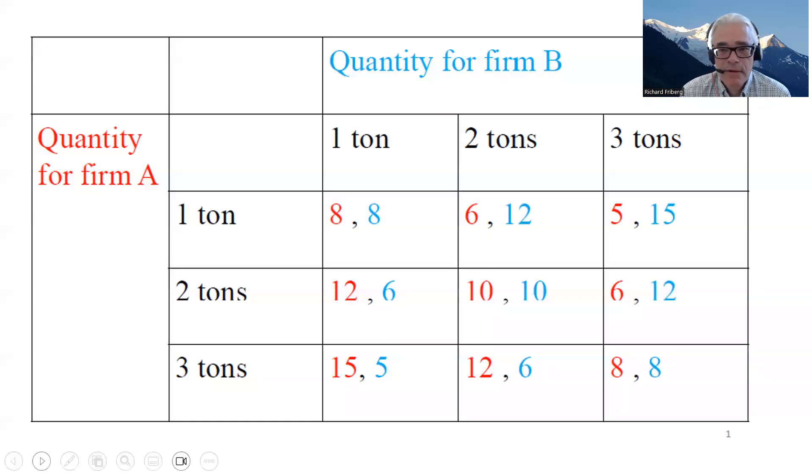The way we teach Cournot typically in introductory microeconomics and the way it's also taught in this book is by using functions and finding best response functions. So quantity is a continuous variable. You choose to produce one ton, 1.1, etc.